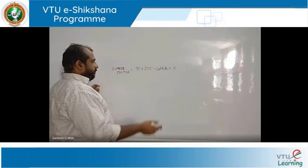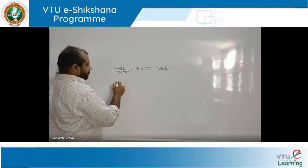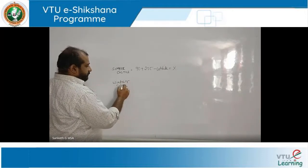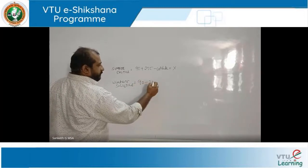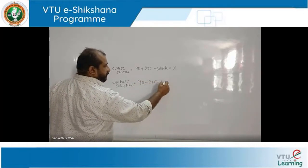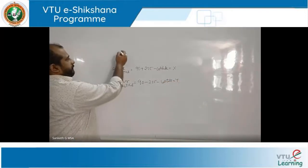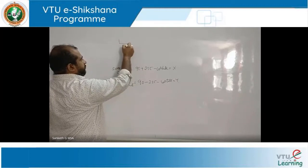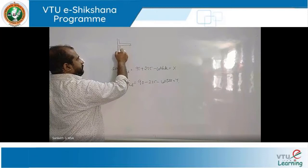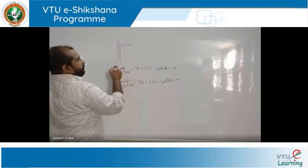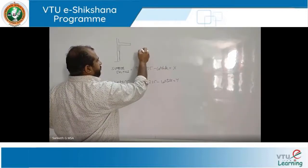For winter solstice, the same equation becomes 90 minus 23.5 minus latitude — let's call this y. A horizontal shading device can be in the shape of a chajja, or sometimes what happens is it can be in terms of a building block itself. Let's say the ground floor is like this, having a window.